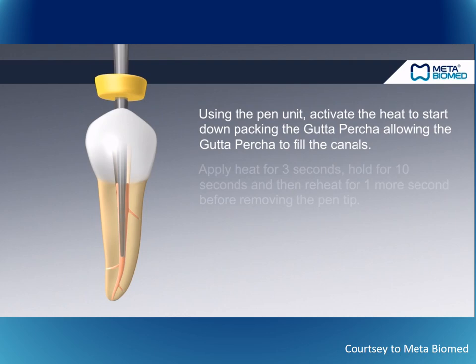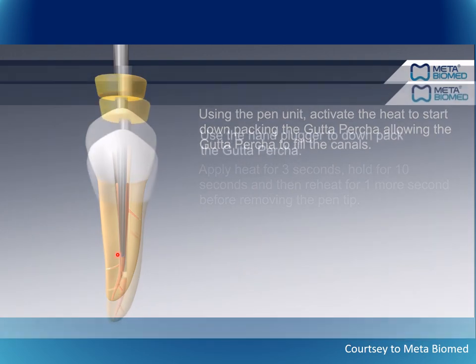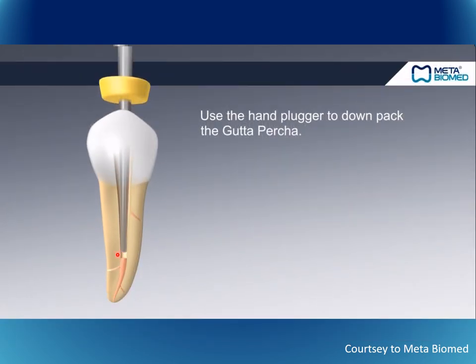We bring the heated spreader into the canal, activate the heat, and drive it down through the gutta-percha cone to heat it. Then we use a hand plugger to adapt the apical portion of the gutta-percha, so that the sealer and gutta-percha seal any irregularities and lateral canals in this area.